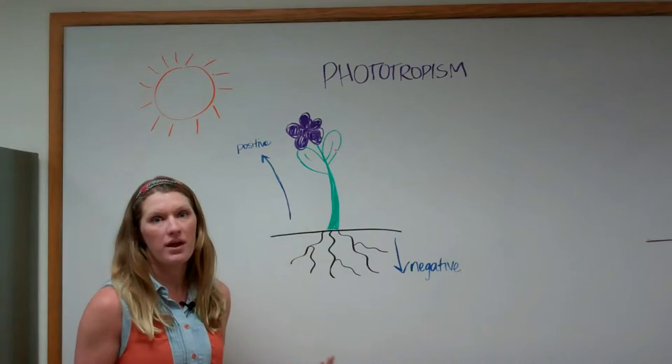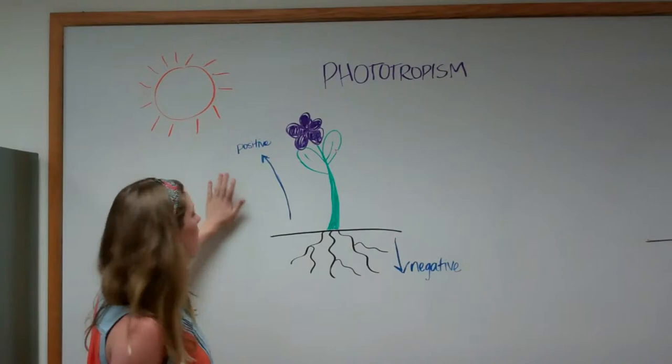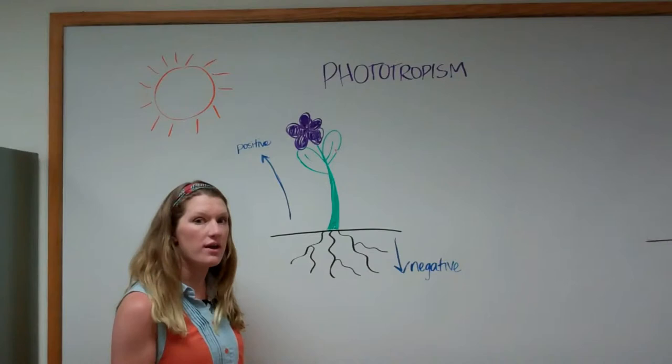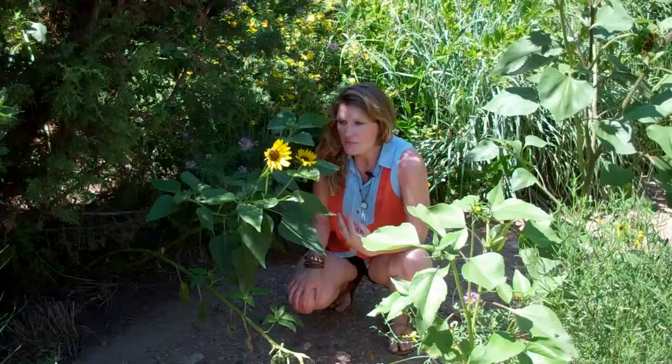All plants are capable of moving toward or away from a light source in a process called phototropism. Usually what happens is that the shoots — the portions that are above ground — experience positive phototropism and move towards the light, whereas the roots experience negative phototropism and move away from the light. So plants can actually use light as a directional cue for which way to move and grow.